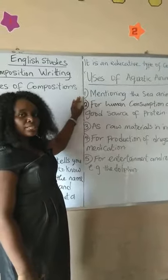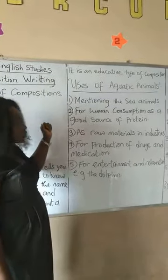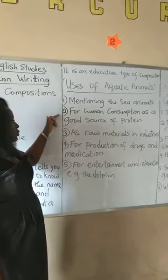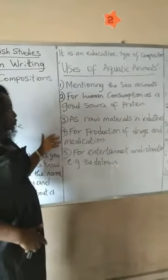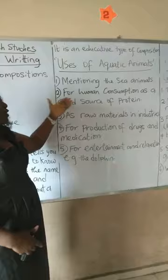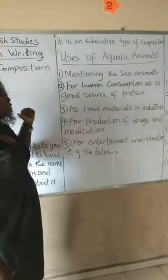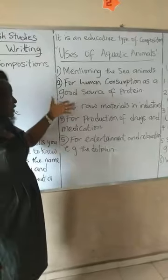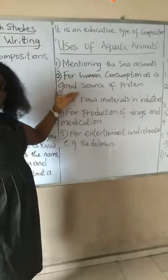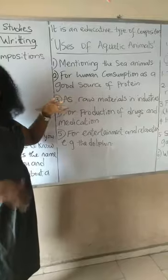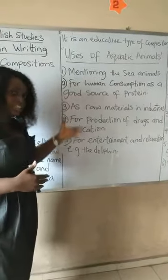We take the following steps. I gave you some of the things we use them for, and I want you to talk further on it. When you mention that aquatic animals are a source of protein, tell us more about that. Expand on it — don't just list the points for me.